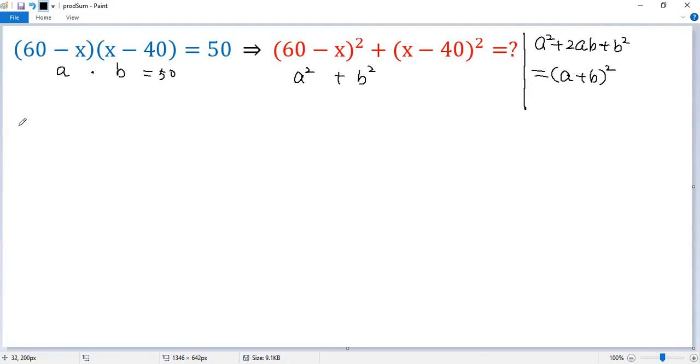Let's go. So (60 minus x) squared plus (x minus 40) squared. Using this formula, we add 2ab in the middle. So we get (60 minus x) squared plus 2ab, 2 times a.